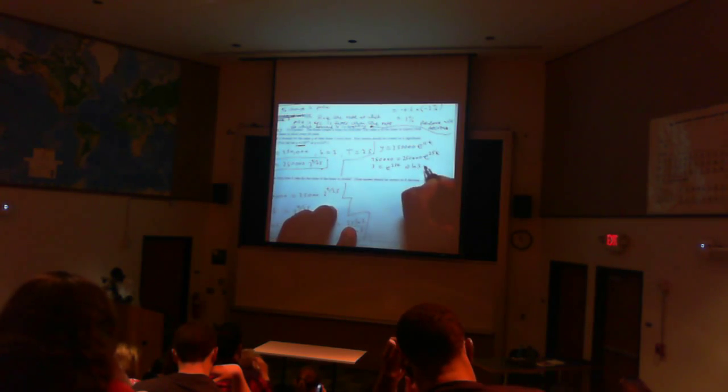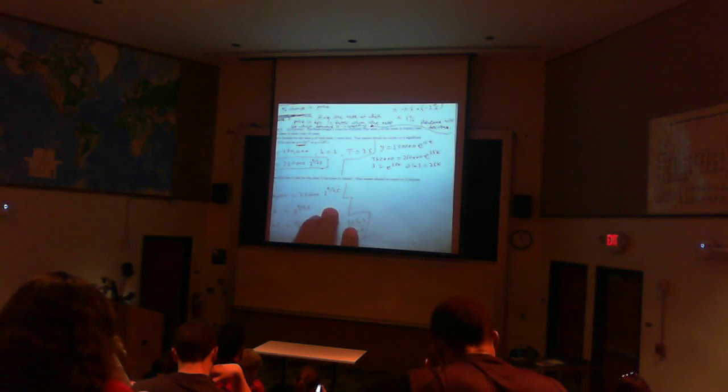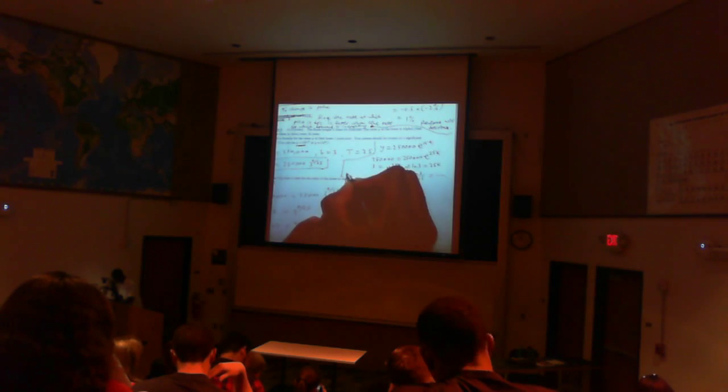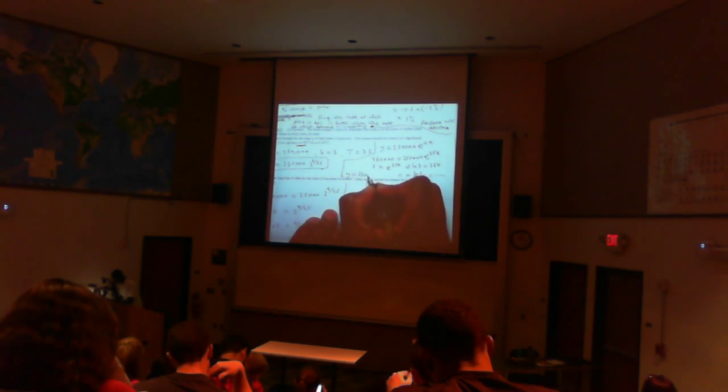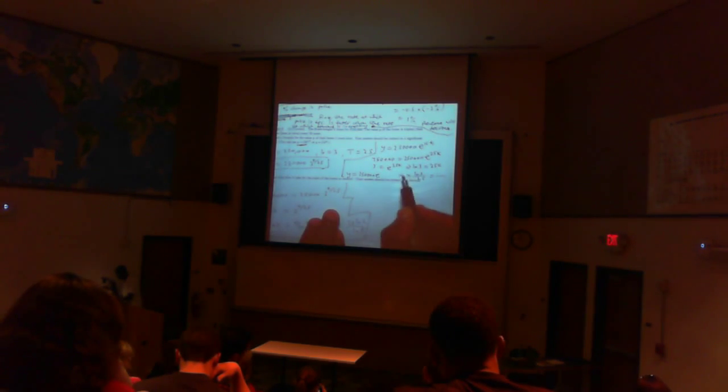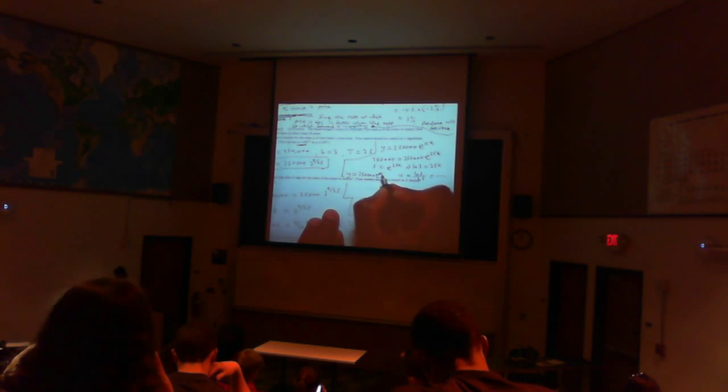So that's if you use the natural exponential model. In that case, this is the same as 3 equals e to the 25k. So you take ln of each side: ln of 3 equals 25k. So k equals ln of 3 divided by 25. And so you write y equals 250,000 times e to the value of k that you found - that's ln 3 over 25 times t. That's how you find t - you plug that value here.